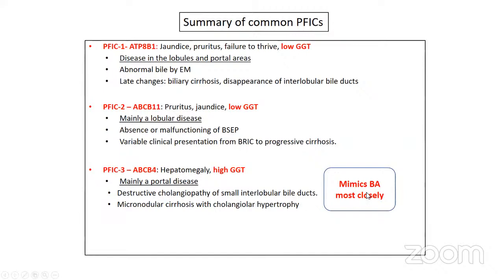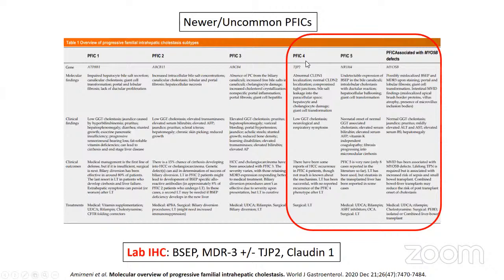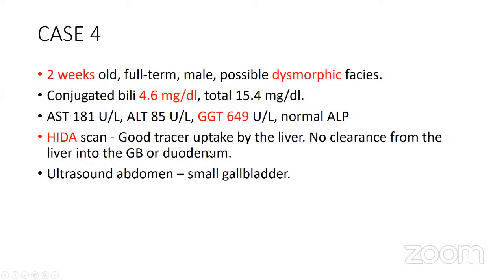Among the three PFIC types: PFIC1 is a disease of lobules and portal tracts; PFIC2 is mainly a lobular disease; and PFIC3 is mainly a portal disease that most closely mimics BA. There are also advances with PFIC4, PFIC5, and a PFIC associated with MYO5B defects.